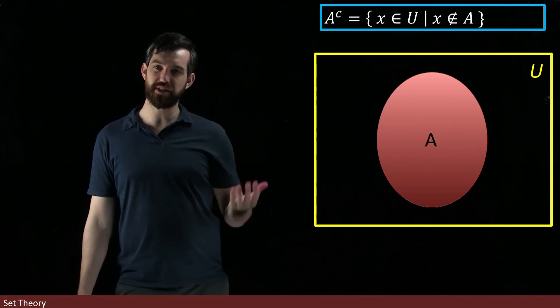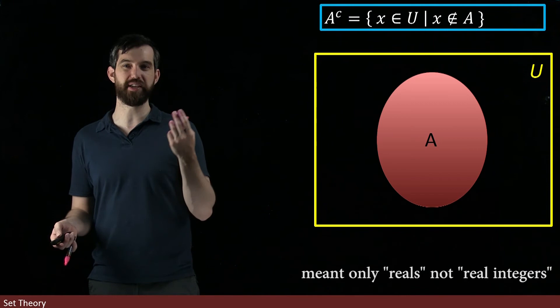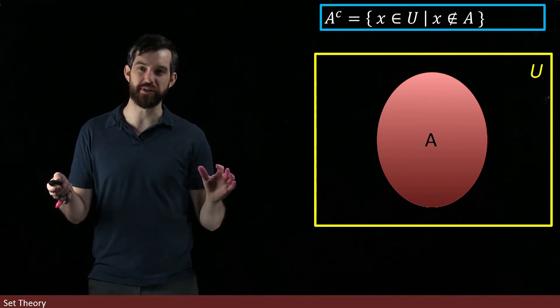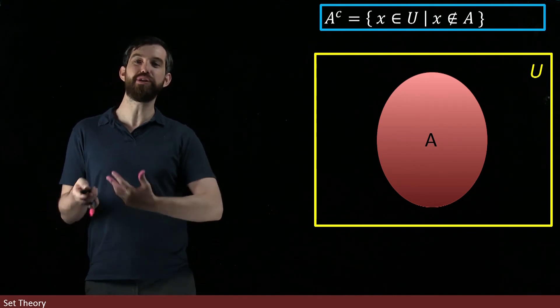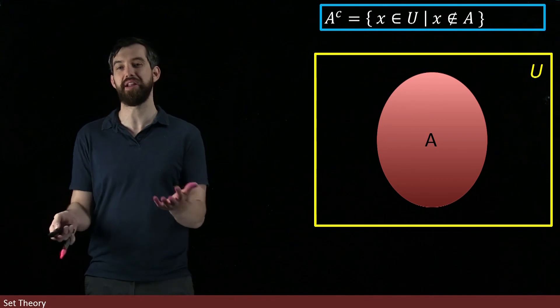But if my broader universe that I'm considering is all real numbers, things like pi and things like one half, then the complement of the even integers includes the odd integers, but it includes all of those other rational and irrational numbers as well that are not even integers.